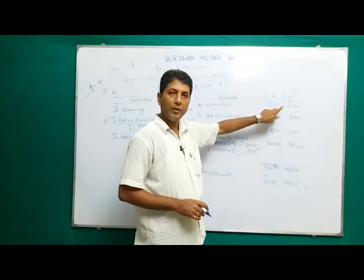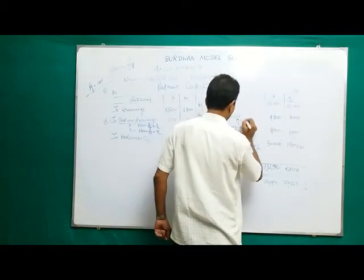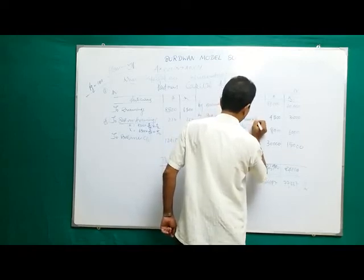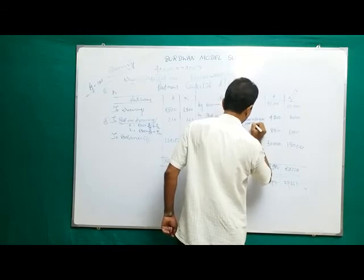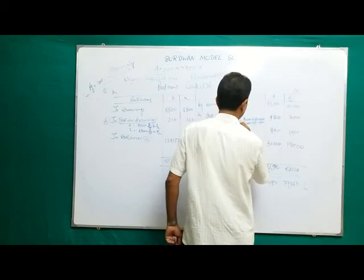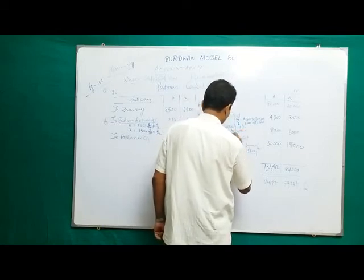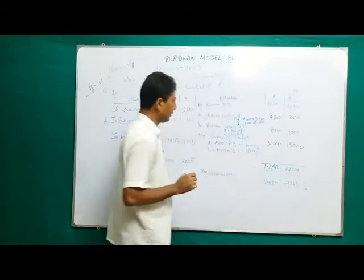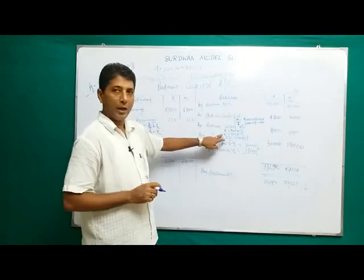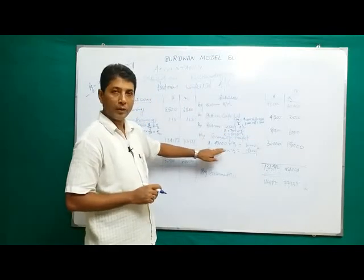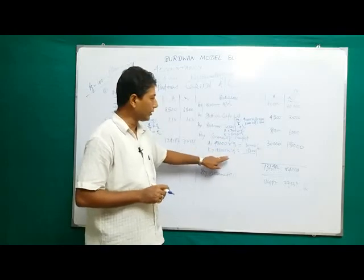When capital is fixed, capital is 90,000 and 60,000. Interest on capital: Onuba — 90,000 into 5% equals 4,500. Kajol — 60,000 into 5% equals 3,000. Partner salary: Onuba — 700 into 12 equals 8,400. Kajol — 500 into 12 equals 6,000. Share of profit: total 45,000, ratio 2 to 1, so 2/3 gives 30,000 for Onuba and 1/3 gives 15,000 for Kajol.